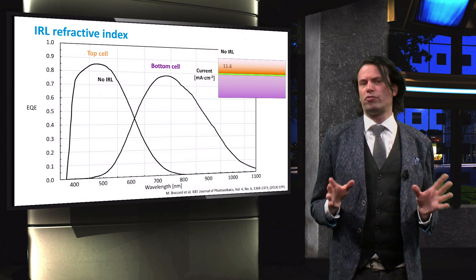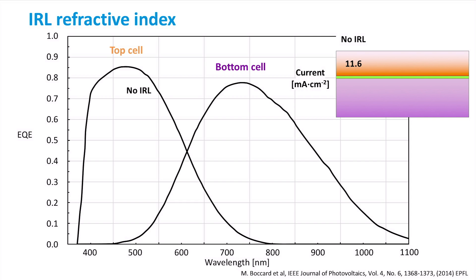The top cell of this micromorph device produces 11.6 mA per square centimeter, while the bottom cell produces 15.8 mA per square centimeter. We now introduce an intermediate reflective layer with a refractive index of 2.05 at a wavelength of 600 nm.